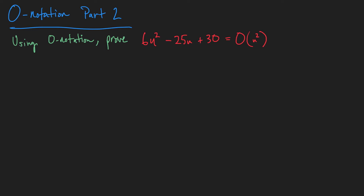We need some supporting facts to actually prove this. We can't just say it's O(n²) because n² is the leading term or the fastest growing term. So let's do a little side work first and find some facts we can use to actually prove this — and note that this side work is not our proof.